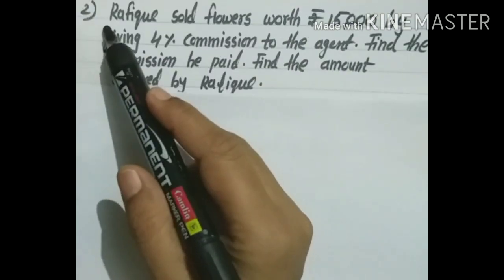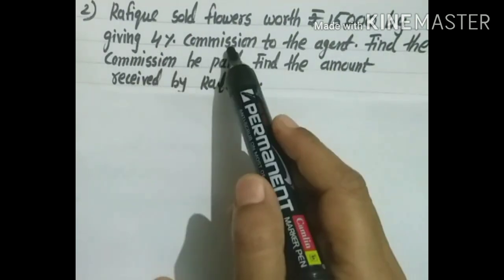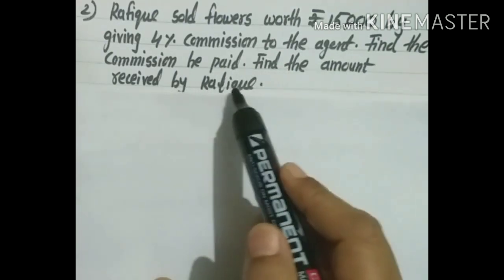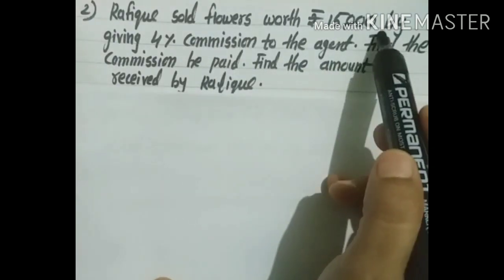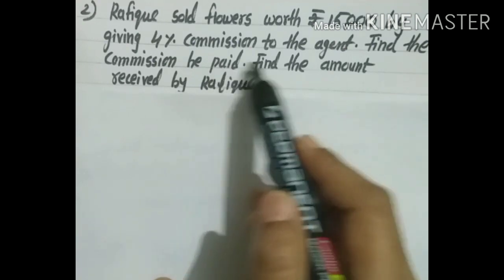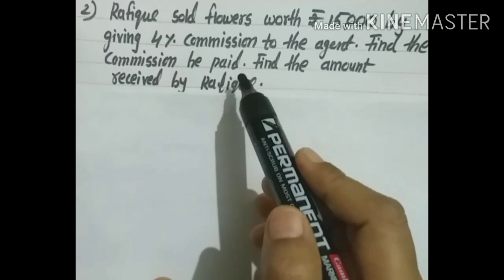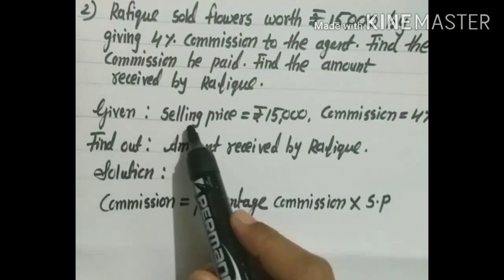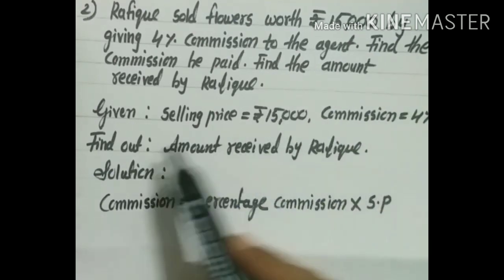Question number two: Rafik sold flowers worth ₹15,000 by giving 4% commission to the agent. Find the commission he paid and the amount received by Rafik. Given: Selling Price = ₹15,000, Commission = 4%. Find out: commission in rupees and amount received by Rafik.